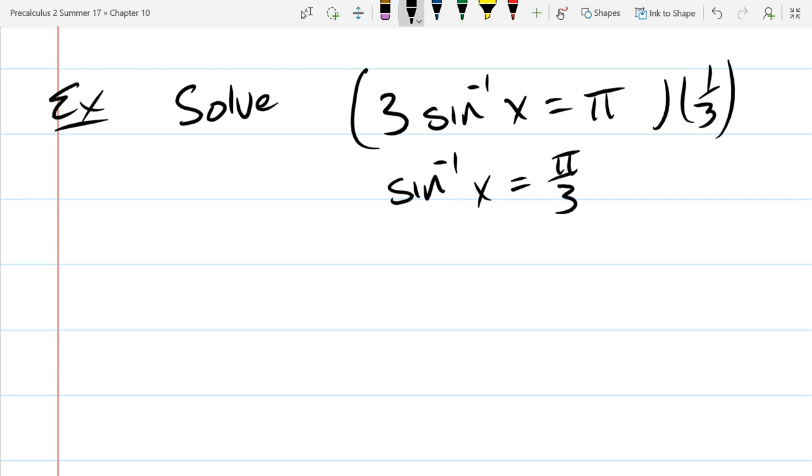Now how do we get sine inverse out of here? Well you're going to change this around. This is equivalent to x equals sine of pi over three, and sine of pi over three is square root of three over two.